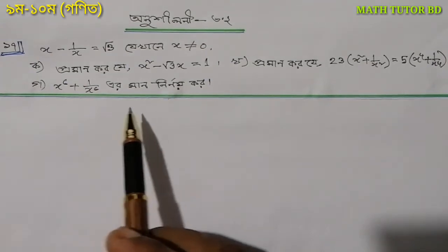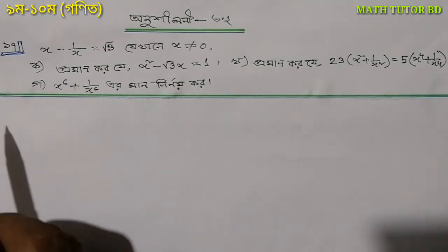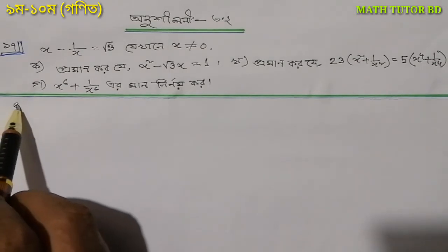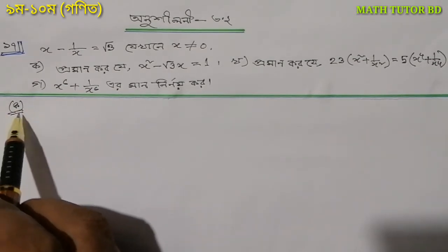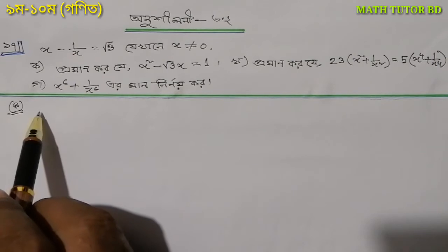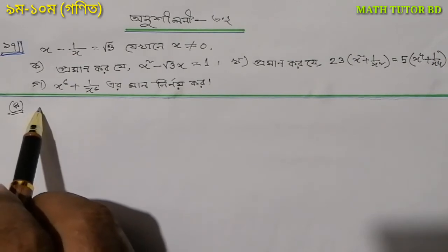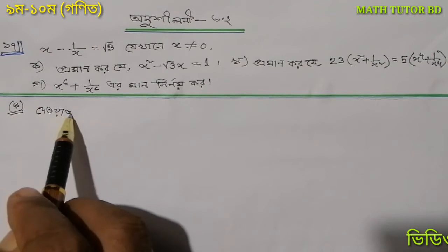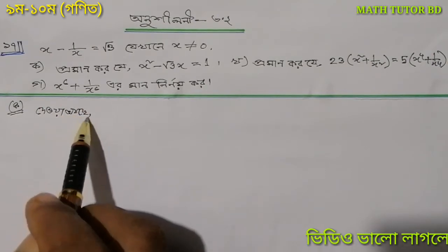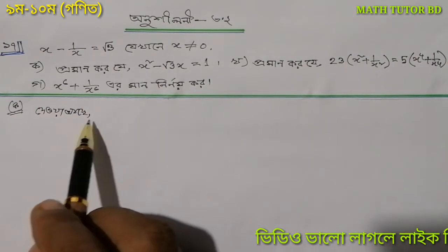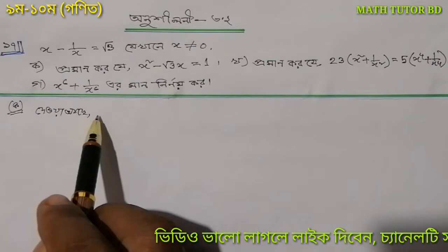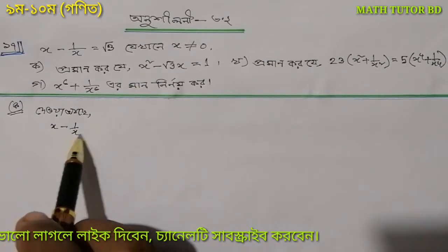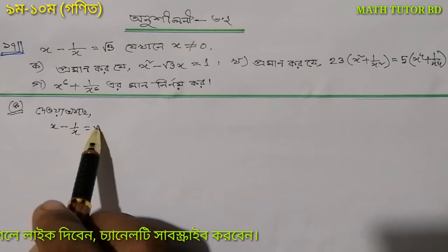Welcome. I have worked through the first number. You can see which number I have done — the answer is 2. x minus 1 by x is equal to root 3.